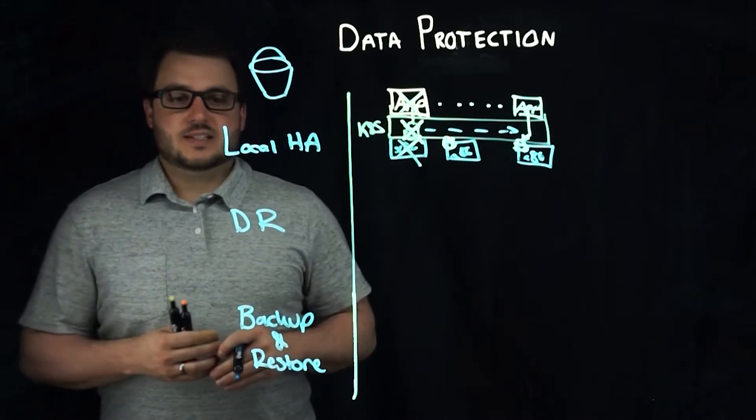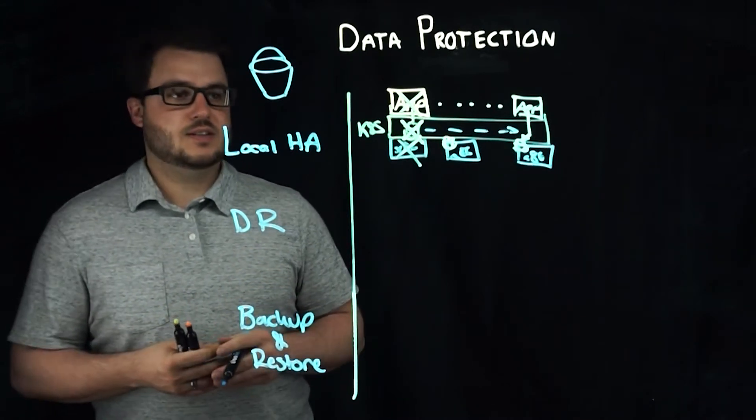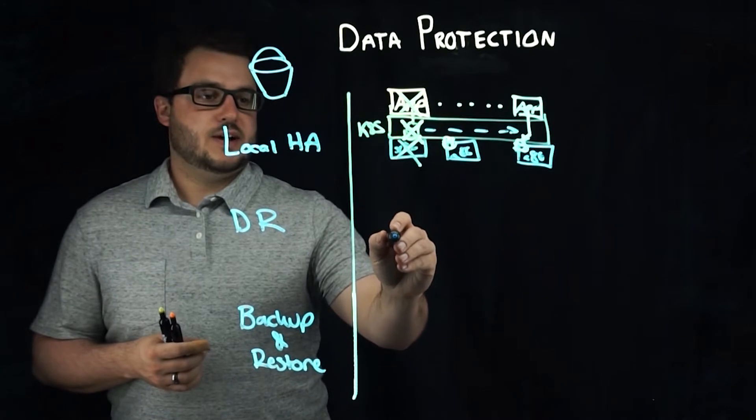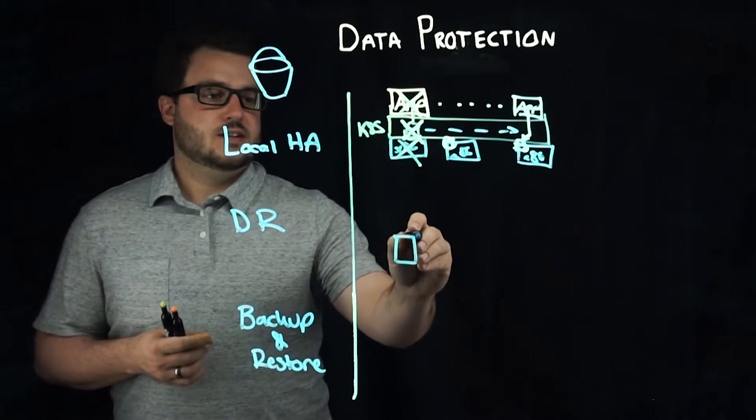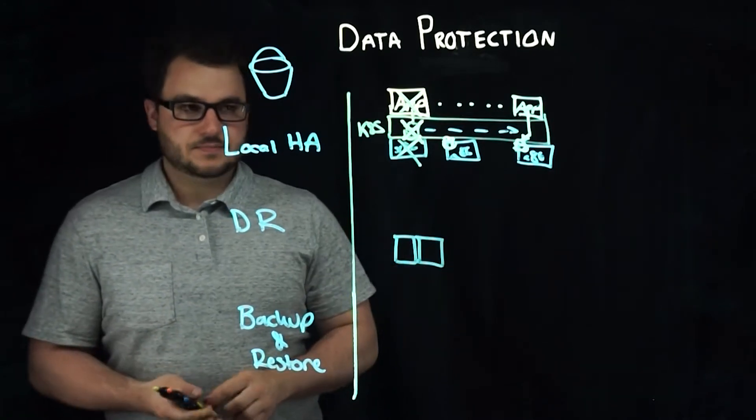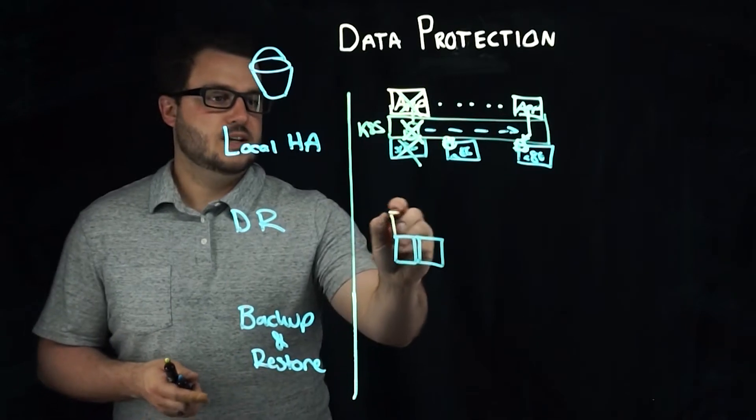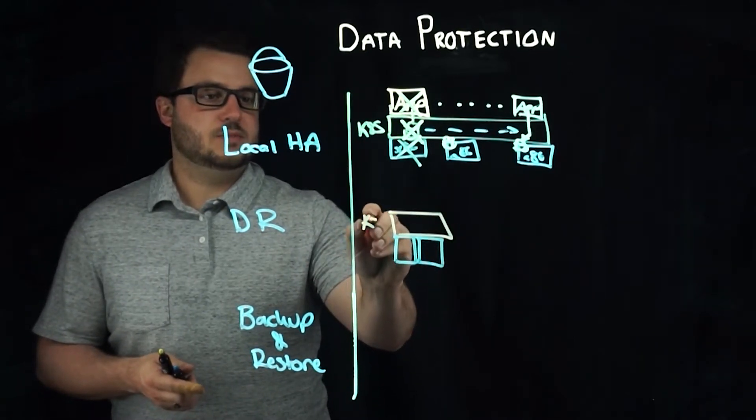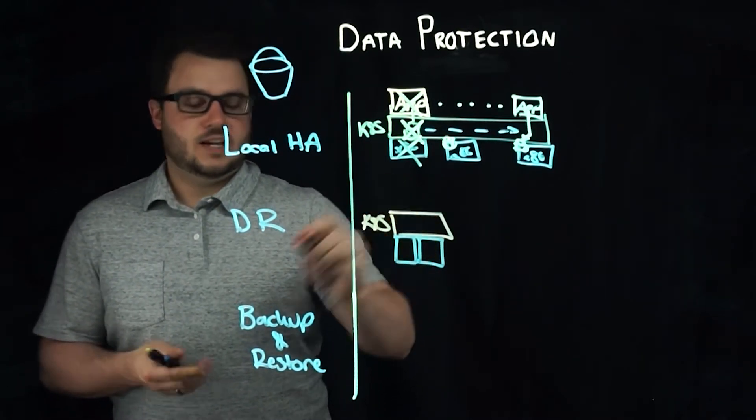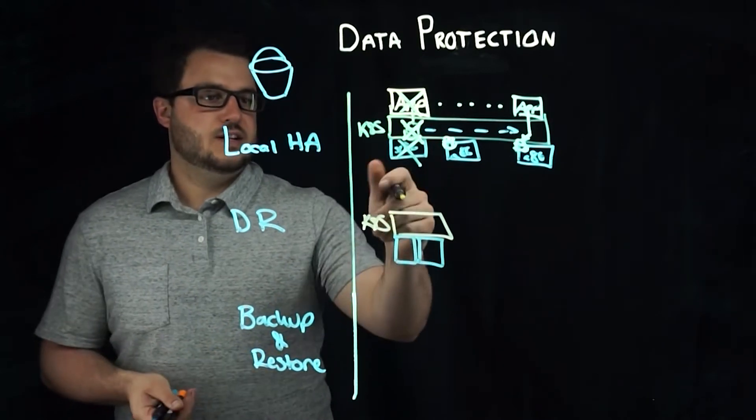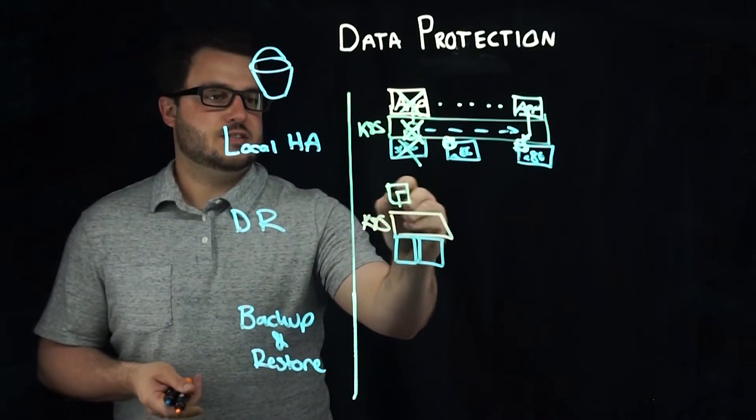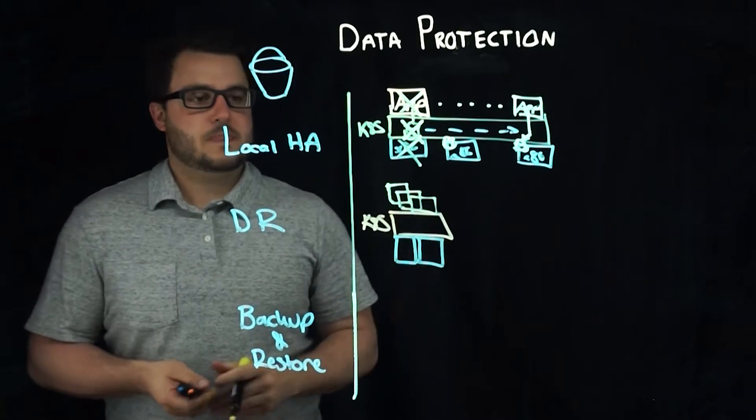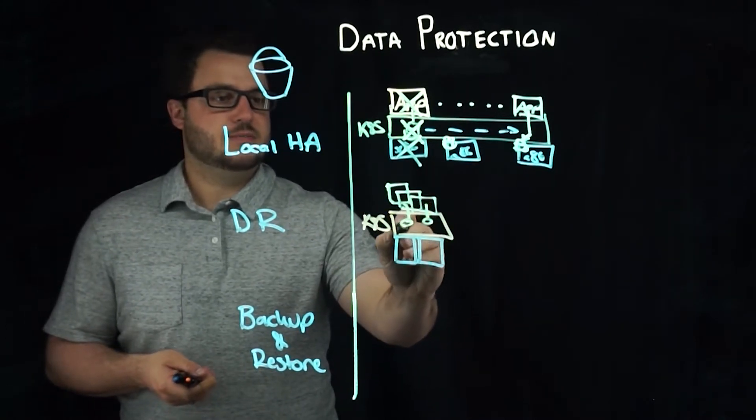The second bit of this is disaster recovery. This is more in the sense where you have, say, a cluster again running Kubernetes, and you have a number of different applications, and those applications have volumes.